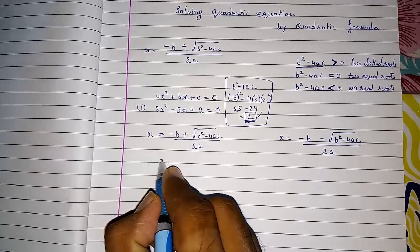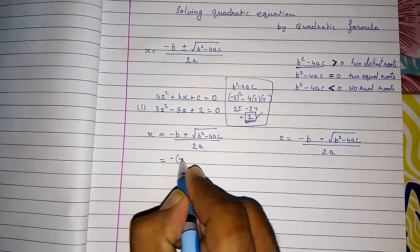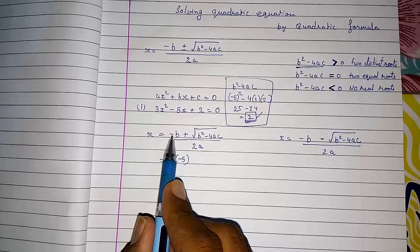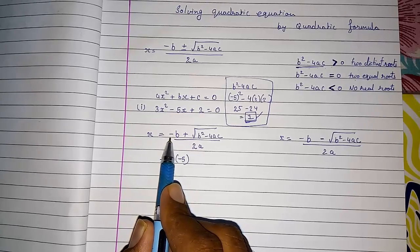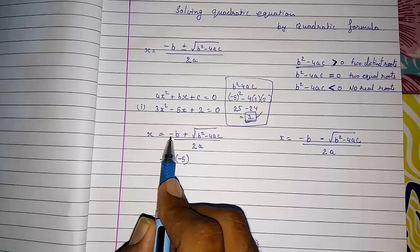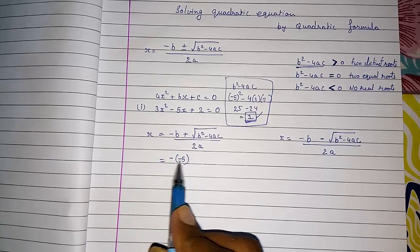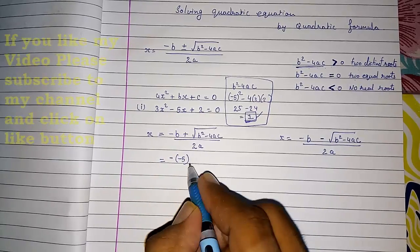Now we are going to put it minus minus 5. Generally students are making mistake here. They are not taking 2 times minus. b is also negative and the value of b is also minus 5. So minus minus, 2 times minus will be there.